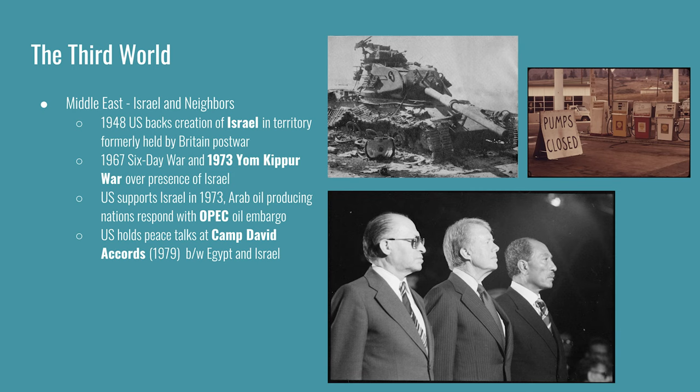Israel also gained control of the West Bank and the Gaza Strip. In the 1973 Yom Kippur War, Israel's Arab neighbors, led by Egypt and Syria, launched a surprise attack on the Jewish holiday of Yom Kippur. Israel eventually repelled the attacks, and the war ended with a ceasefire that largely favored Israel.